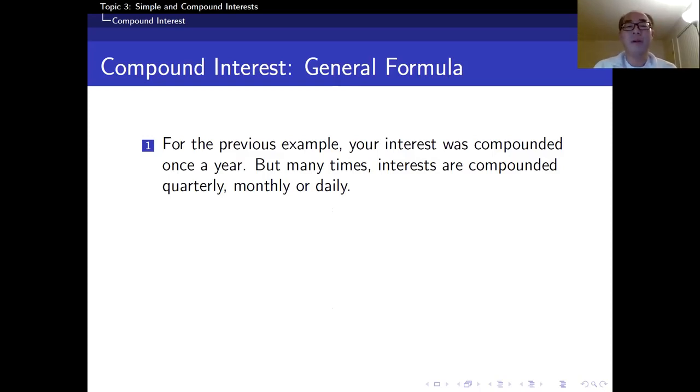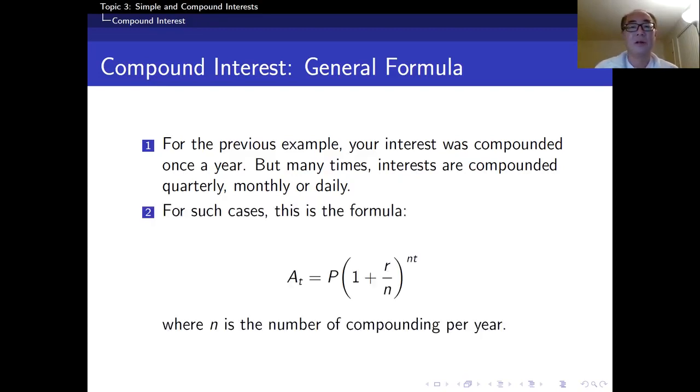For the previous example, your interest was compounded once a year. But many times, the interest is compounded quarterly, monthly, or daily. In that case, we're going to modify the formula: A sub t equals P times (1 + r/n) to the power nt. r is the annual interest rate, so r is divided by the number of compounding. For the case of quarterly, the year is divided into four equal parts, so n equals 4. For quarterly, n equals 4. For monthly, because there are 12 months in a year, n equals 12.